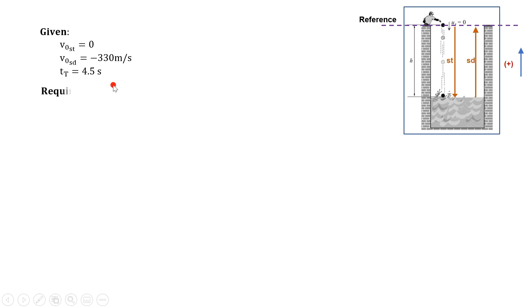To denote what is required, we just write the required depth as h, which is technically same with distance. We begin our solution by writing the implied given, such as the acceleration of the stone, which is equal to acceleration due to gravity, g equals negative 9.81 m/s², and that the total time of 4.5 seconds is also equal to the sum of the time taken by the stone and the sound to cover depth h. Later on, this equation will be very helpful to relate the two motions in order to get the value of h.